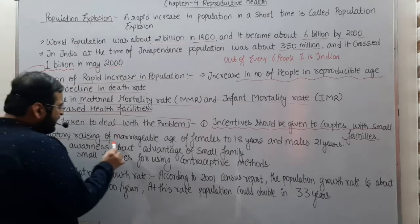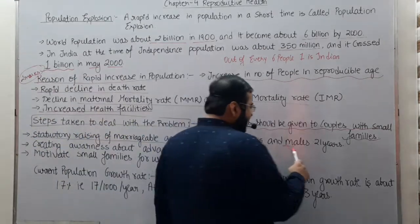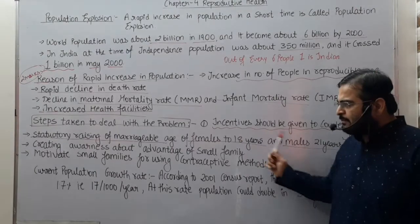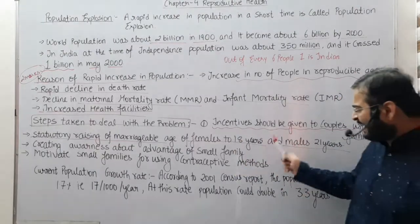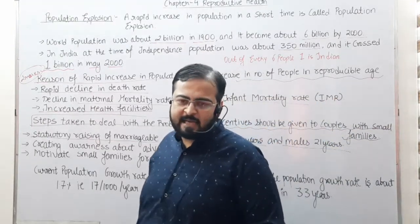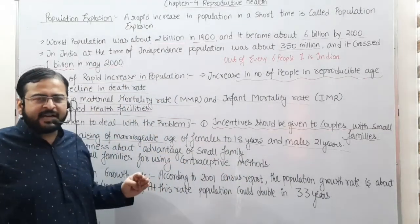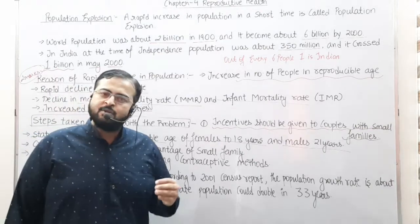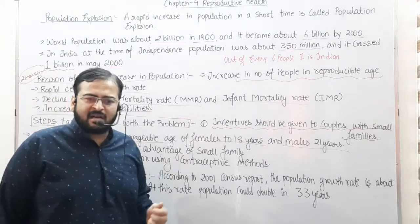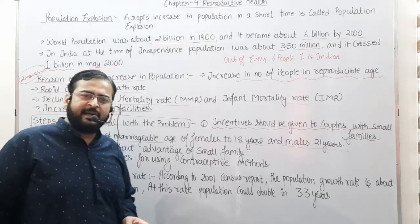The second step is statutory raising of the marriageable age — females to 18 years and males to 21 years. The government has fixed the marriageable age: 18 years for females and 21 years for males. This will also help in controlling the population growth rate. If anyone tries to get someone married before this age, legal action can be taken against them.